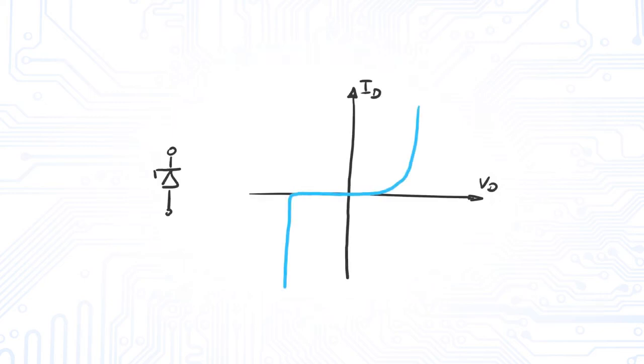The symbol of a Zener diode is also quite easy to remember. The crossbar of the symbol has simply become a representation of the Zener breakdown.